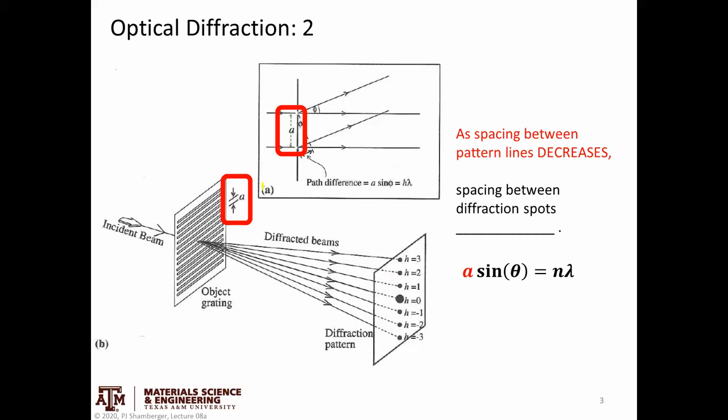So we can think about a couple quick things. First of all, what is going to happen as that spacing increases? Or maybe alternatively, as I ask it here, as the spacing between the pattern lines decreases, so if this distance A gets smaller, what is going to happen to the separation between these spots? And if we look at the equation, we see that if A gets smaller, the sine of the angle, or the angle itself, has to get larger, given that this value is fixed. So as the spacing between the pattern lines decreases, the spacing between diffraction spots increases.